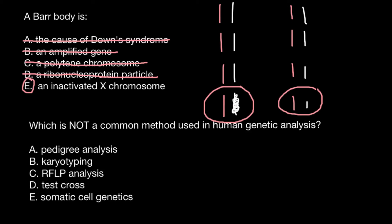Next question. Which is not a common method used in human genetic analysis? Answer A, pedigree analysis. This is what we normally use in human genetics because this is probably the first thing what geneticists would do for you if you would come to a genetic consultation.